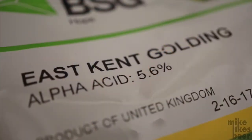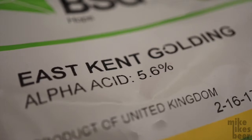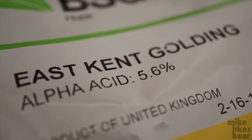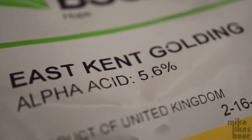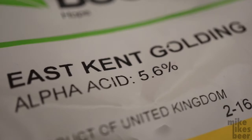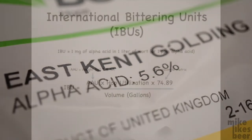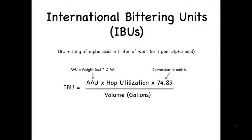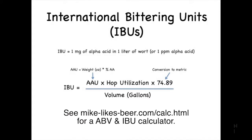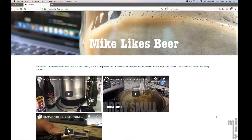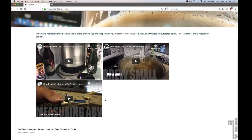First, we need to calculate the alpha acid units. This is done by taking the percentage of alpha acids in the hops and multiplying it by the weight of the hops. We then need to adjust this for the volume and gravity of the boil, and also convert to metric, since IBUs are expressed in milligrams per liter. The utilization refers to the efficiency of the boil, and requires knowing the brew's original gravity.